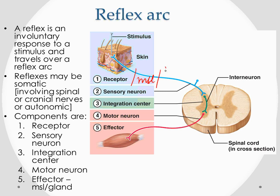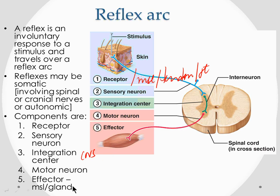The components of a reflex arc are: a receptor (in skin, muscle, tendon, joint, or even the eye), a sensory neuron, an integration center in the central nervous system, a motor neuron, and an effector — which may be skeletal, smooth, or cardiac muscle, or a gland.